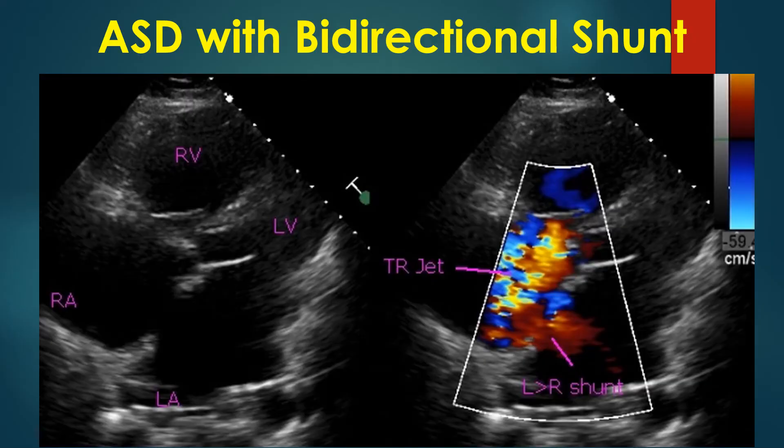This image shows red-colored flow across the ASD, indicating a left-to-right shunt. In addition, there is a mosaic multicolored jet spreading from the tricuspid valve into the right atrium, due to tricuspid regurgitation.